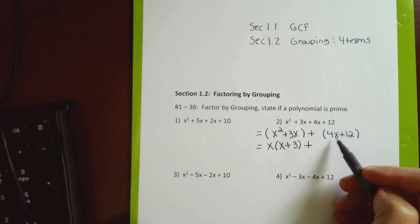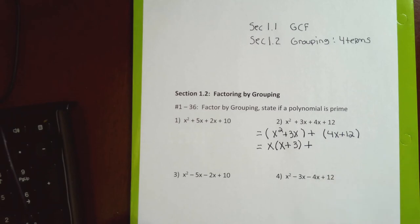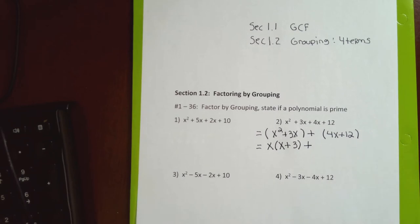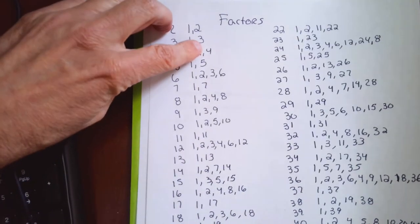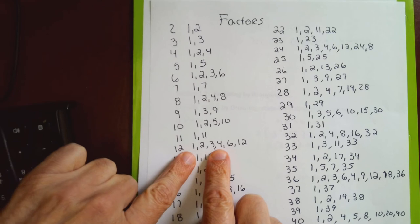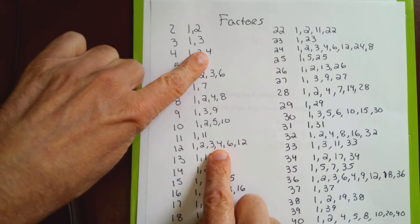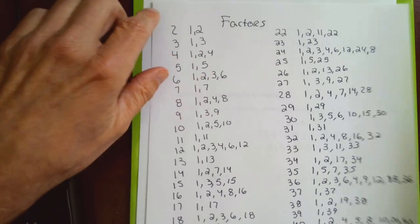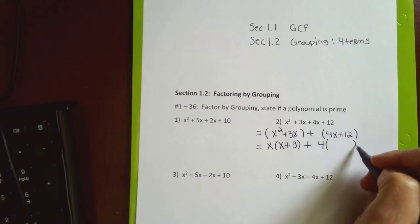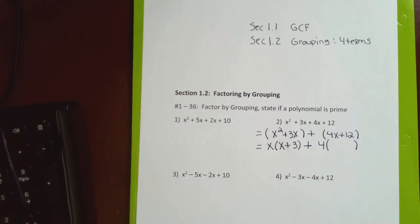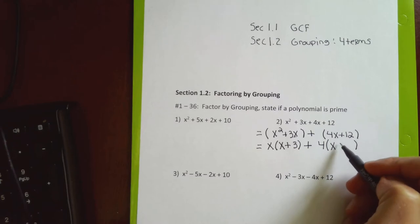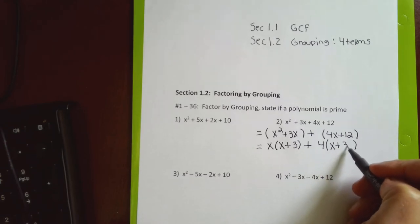In the second parenthesis both terms don't have an x, so I don't get a common factor of x. But the numbers 4 and 12 — the biggest number that divides evenly into both is 4. So in the second parenthesis I factor out a 4. Dividing 4 by 4 gives 1, and I leave the x; dividing 12 by 4 gives 3.